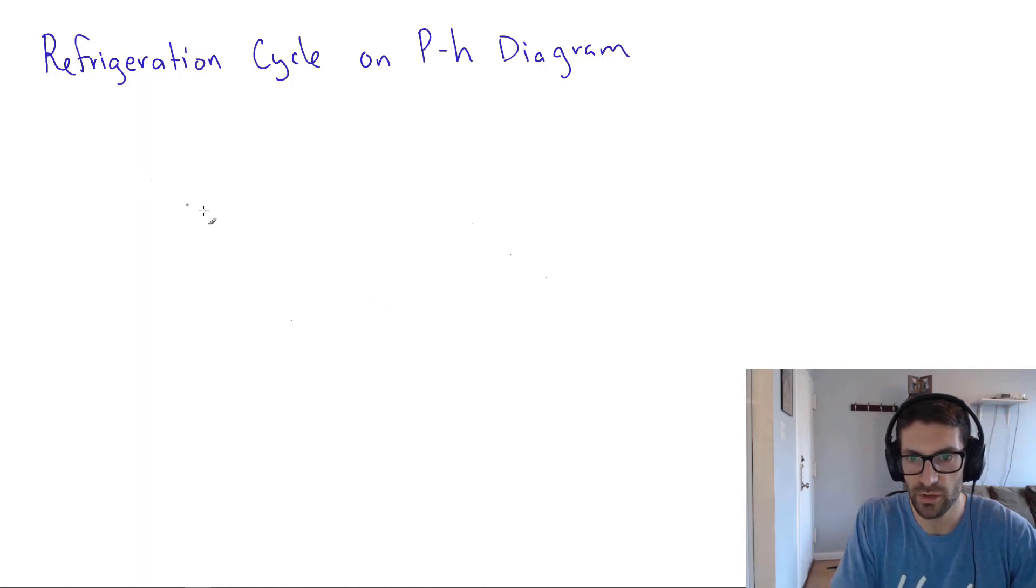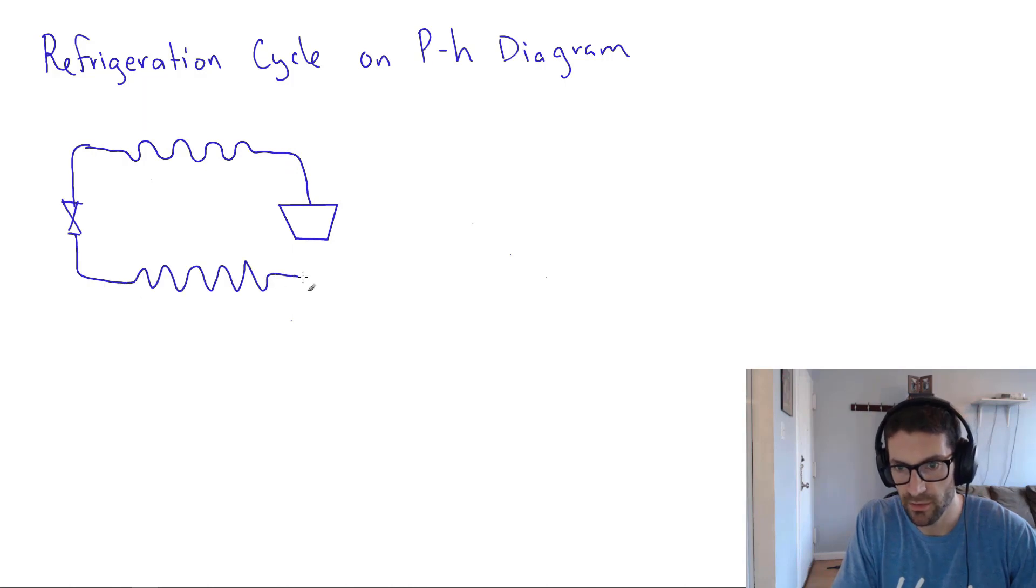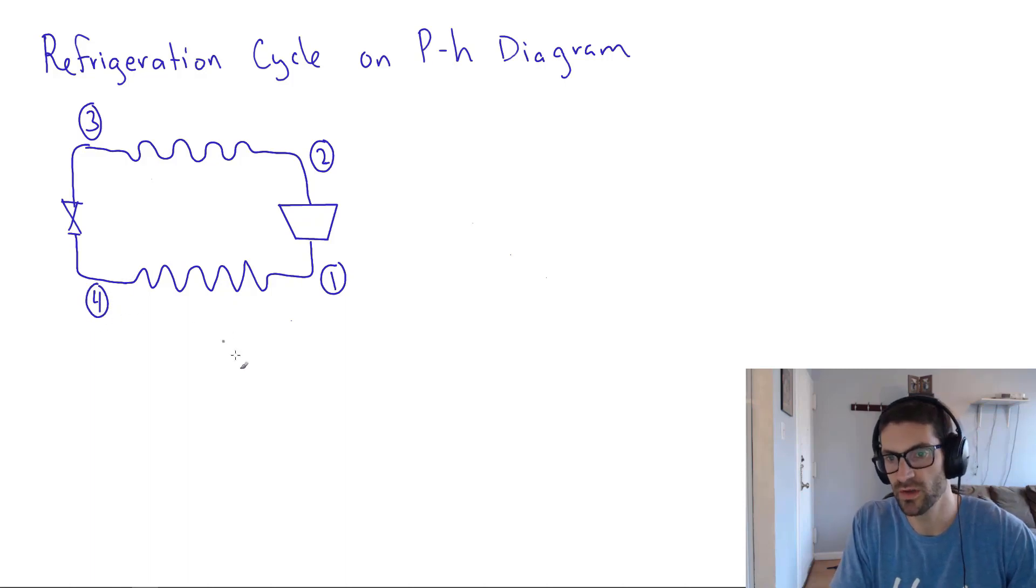So let's go back and recreate the diagram that we drew yesterday. So we have our compressor and our condenser, expansion valve, and our evaporator coil. And let's label each stage of the process here. We can call the entering compressor condition state one. Leaving the compressor, we'll call that state two, that's entering the condenser. State three is leaving the condenser and entering the expansion valve. And state four is after expansion, before going through the evaporator.